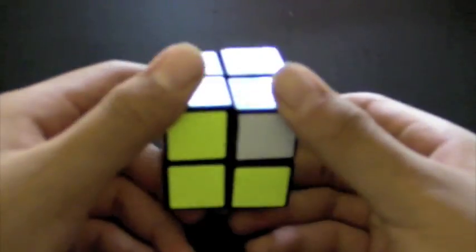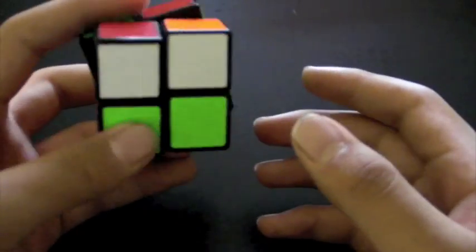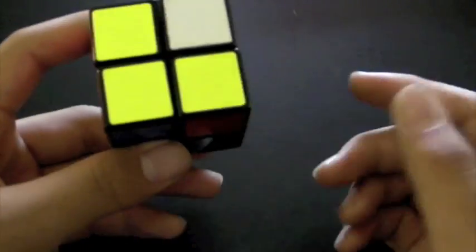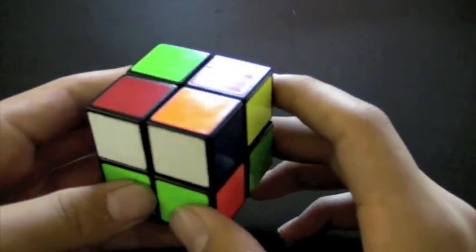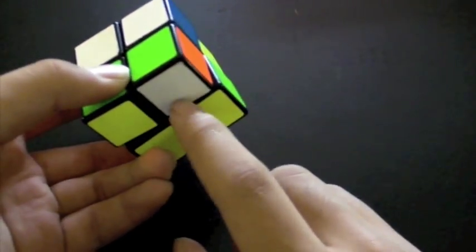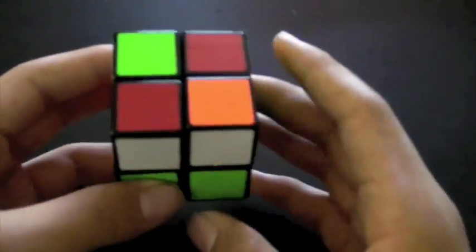This next method, called SS, has 60 algorithms without counting reflections. And so the first step that you usually plan during inspection is just to make three quarters of a face. And after that, you would use one of the algorithms to solve this last piece at the same time as you orient the rest of the top layer.